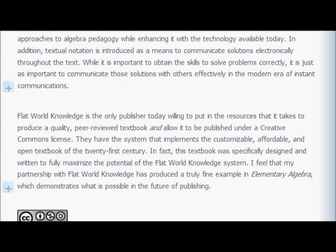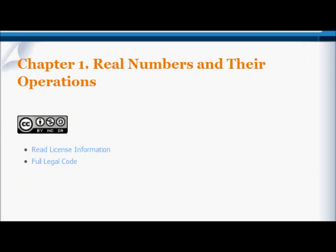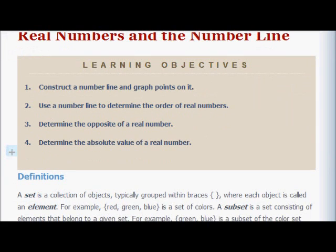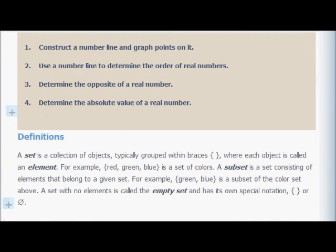Let's just start with Chapter 1, which is called Real Numbers and Their Operations. Section 1 is Real Numbers and the Number Line. We're going to learn how to construct a number line and put points on it. We're going to use that number line to determine the order of real numbers. We're going to figure out what the opposite of a particular real number is, and also what the absolute value of that real number is.